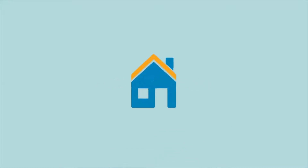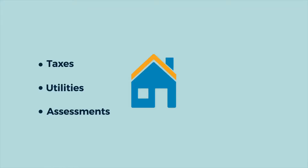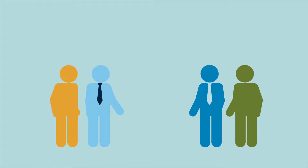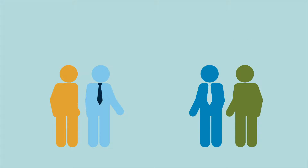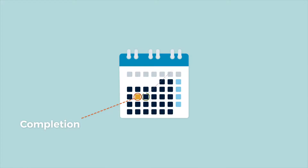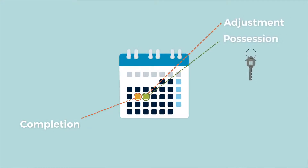Adjustment Date: the adjustment date is the day that the buyer assumes responsibility for the costs of the property, such as taxes, utilities, and assessments, and becomes entitled to its benefits, such as rents. To reflect the change of responsibilities and benefits, the total money paid by the buyer to the seller on the completion date will be calculated so that each party is credited for its fair share, determined as of the adjustment date. The adjustment date is typically the same date as possession.